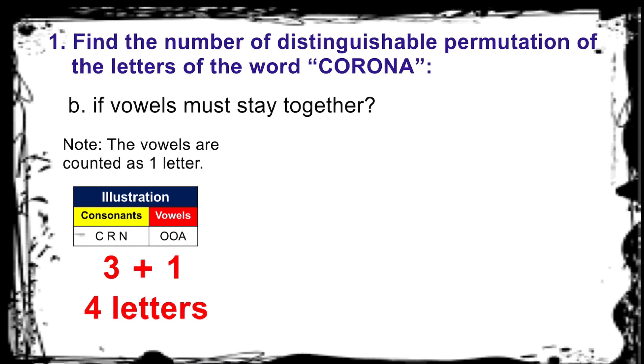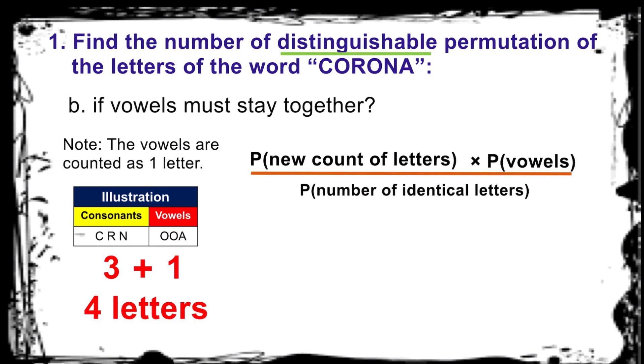What is the formula? Permutation of the new count of letters times permutation of the vowels since the vowels can arrange in its place when staying together. Do you think we missed something? Alright, we must divide the permutation of the identical letters again.